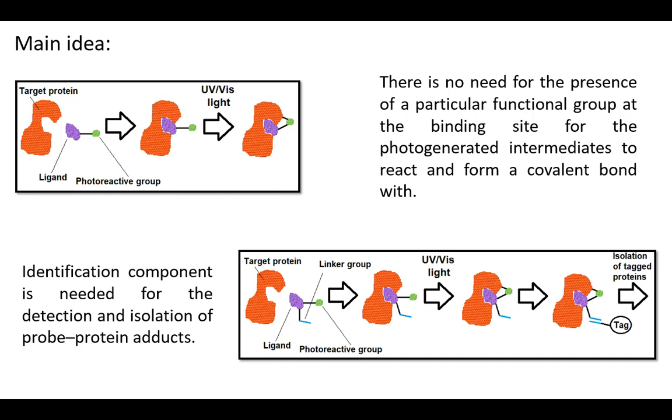The length of the linker groups between functional parts of this system is a key component in photoaffinity probes. If the linker is too short, it may lead to the probe cross-linking with itself, while a too-long linker may place the photoreactive group at too great a distance to capture the target protein efficiently.